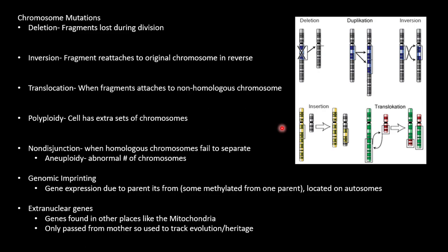Nondisjunction occurs when homologous chromosomes fail to separate. Aneuploidy is when a cell has an abnormal number of chromosomes. Genomic imprinting refers to alteration of gene expression due to the parent it's from. Some are methylated from one parent, resulting in the expression or suppression of a gene. Finally, extranuclear genes are genes that are found in places other than the nucleus, like the mitochondria. Mitochondrial DNA is only passed from mother to child, so it's actually used to track evolution and heritage.